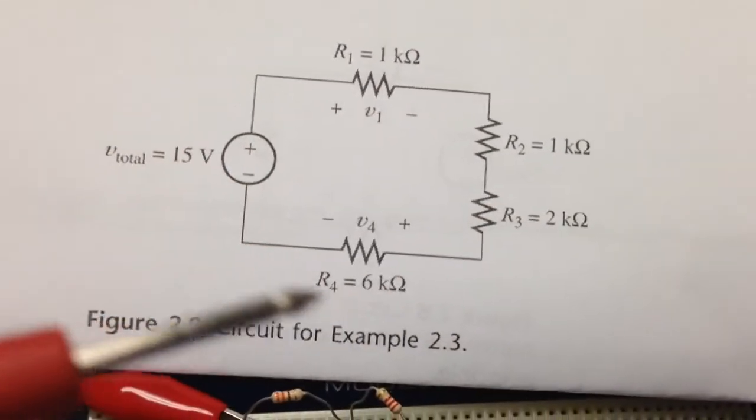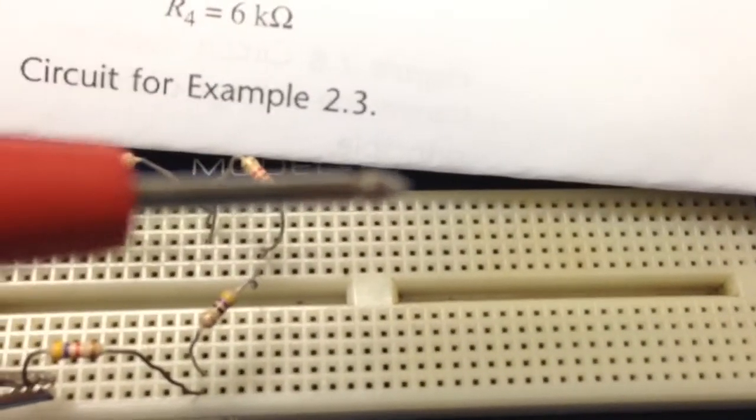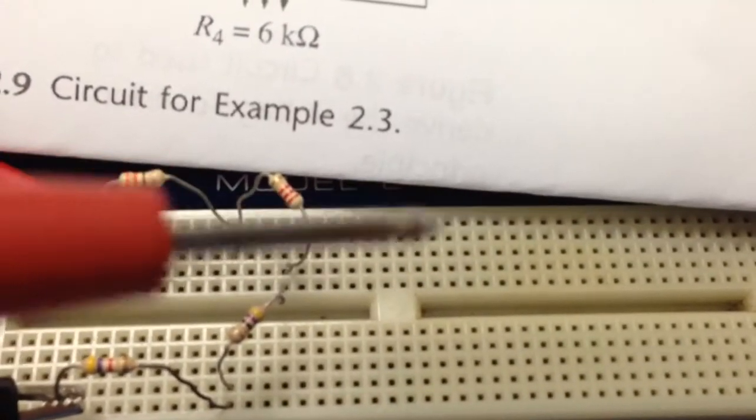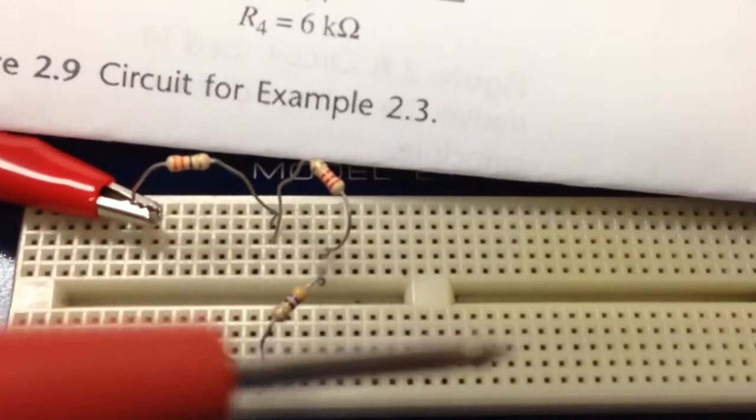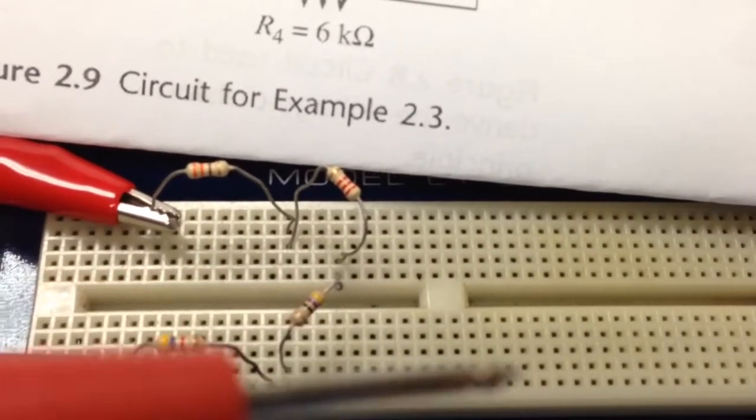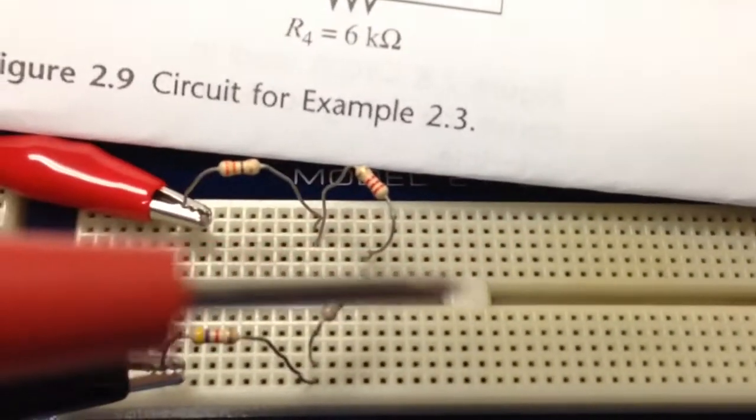Notice that these resistors are in series. Remember that on a breadboard, these vertical five holes are connected behind the plastic, and these five are connected as well, vertically only. There's no connection across the valley.